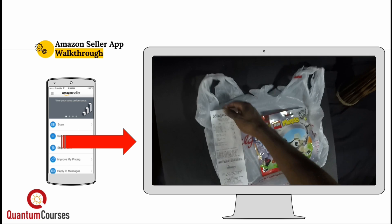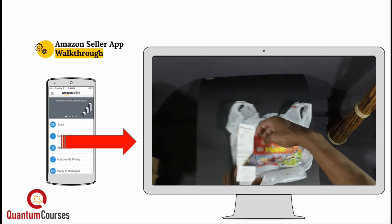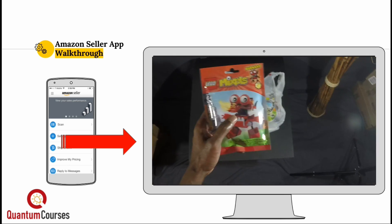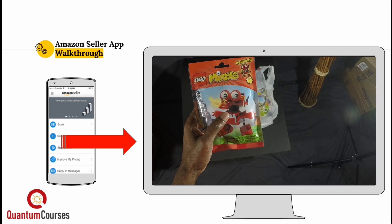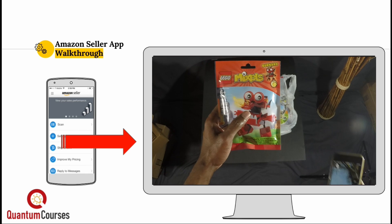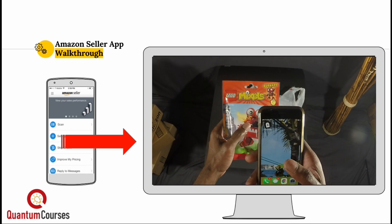Now, let's use the seller central app to take a photo of the barcode. Let me get my phone out of my pocket here. Now click on the seller central app icon to pull up the app.